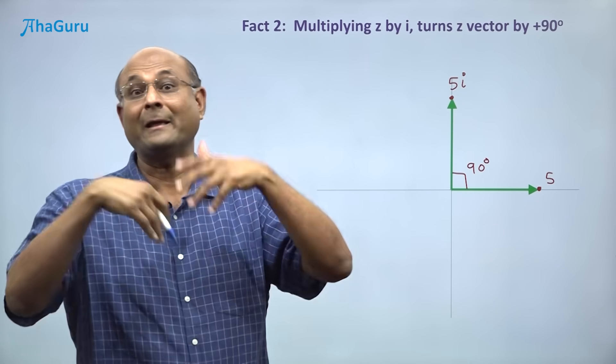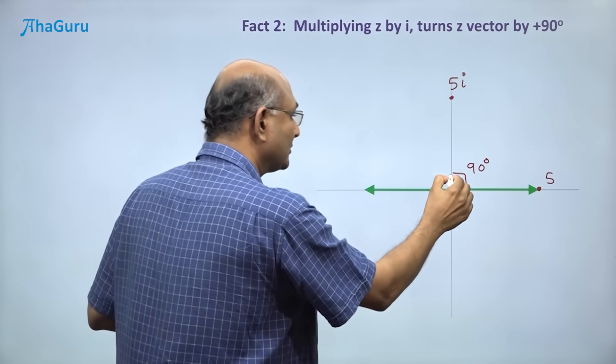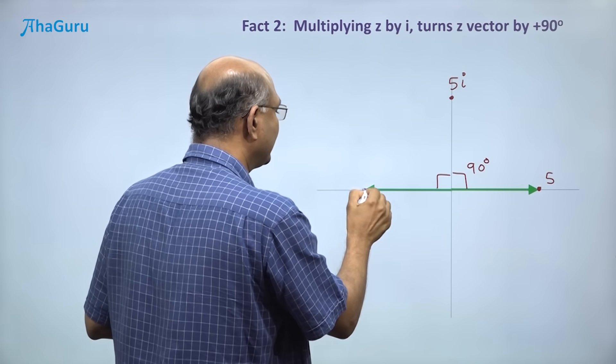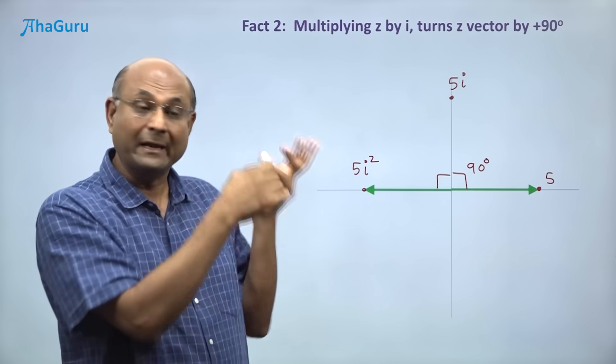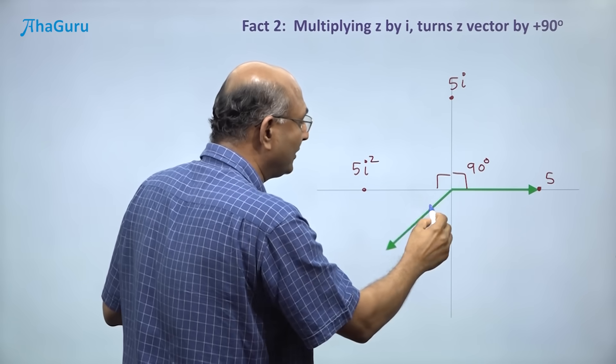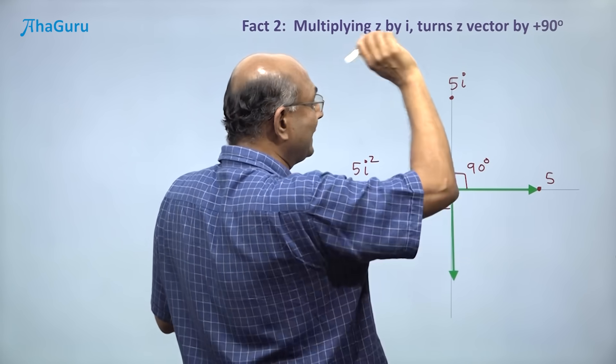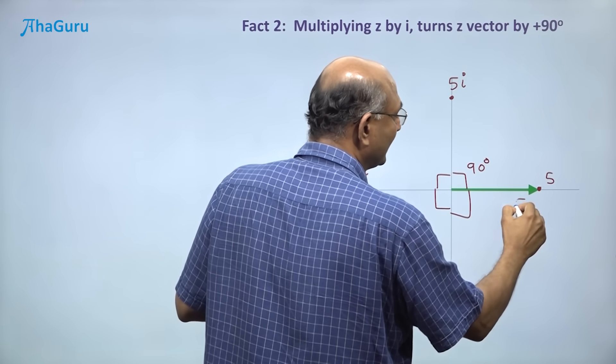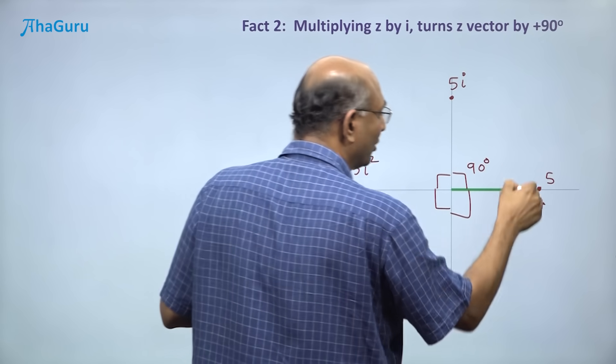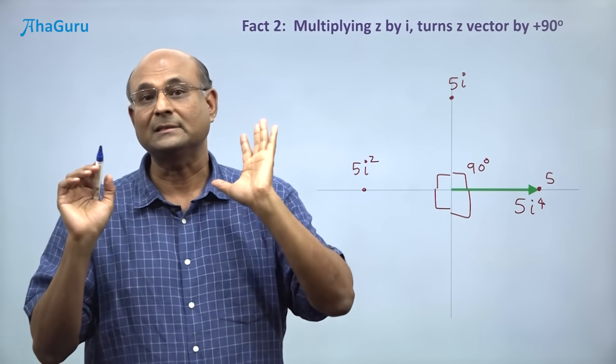If I take 5i and multiply by i, that means I am turning it by another 90 degrees. So this is also 90 degrees and this point would be 5i square. And if I multiply again by i, I will get 5i cube and I will basically be turning it by a third 90 degrees. And again if I multiply by i, that means I turn this by further 90 degrees. So 5i power 4. Of course you know i power 4 is 1, so basically we are back where we started.